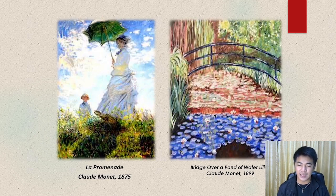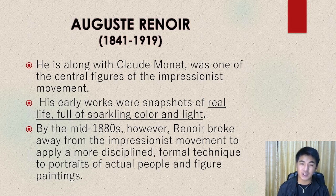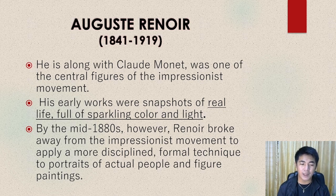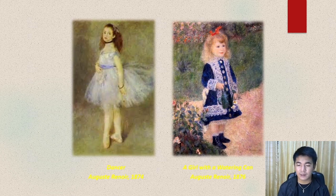Auguste Renoir, along with Claude Monet, was one of the central figures of the impressionist movement. His early works were snapshots of real life, full of sparkling color and light — notice these are the characteristics of impressionism we mentioned earlier. By the mid-1880s, however, Renoir broke away from the impressionist movement to apply a more disciplined formal technique to portraits of actual people and figure paintings. If you observe some of his outputs — a dancer — the lady on the left is actually a ballerina, and the painting on the right is a girl with a watering can.